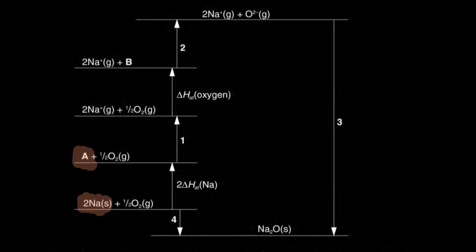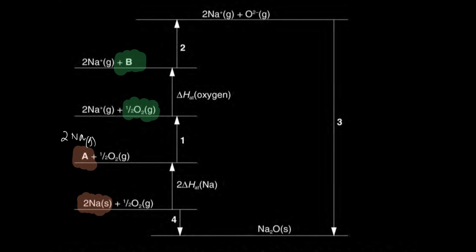Clearly, A is a species from sodium and B is the species from oxygen. Sodium solid is being atomized, so A must be sodium gaseous atoms — two sodium gaseous atoms. B is the atomization of oxygen, so B would be O(g). Since it's half O₂, it makes one mole of gaseous oxygen atoms. Those are species A and B.